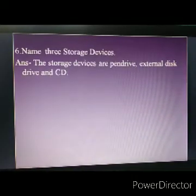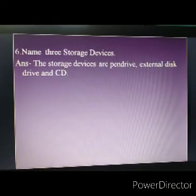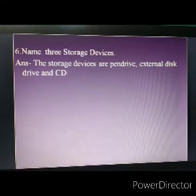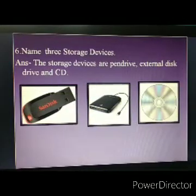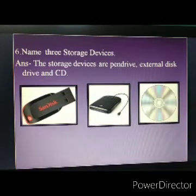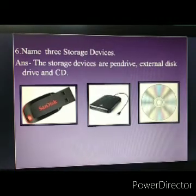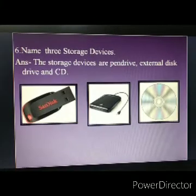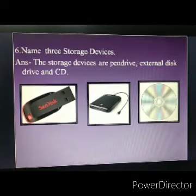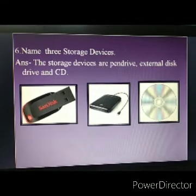The next question is: name three storage devices. The storage devices are pen drive, external disk drive and CD. We discussed in class that storage devices are used to store data. In this image the first one is pen drive, the second is external disk drive, and the last one is CD — the full form of CD is compact disk.